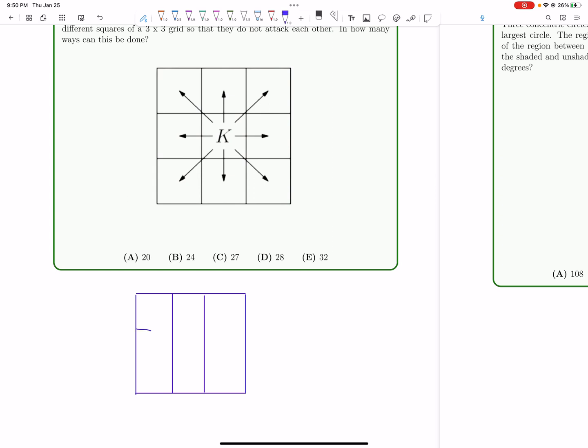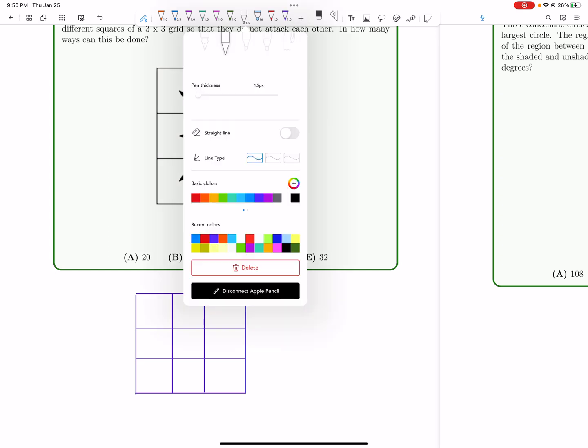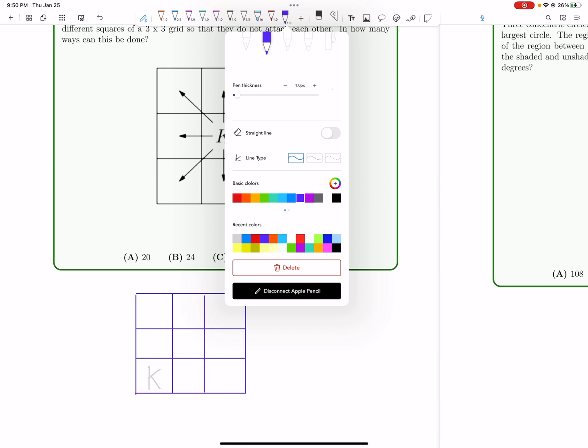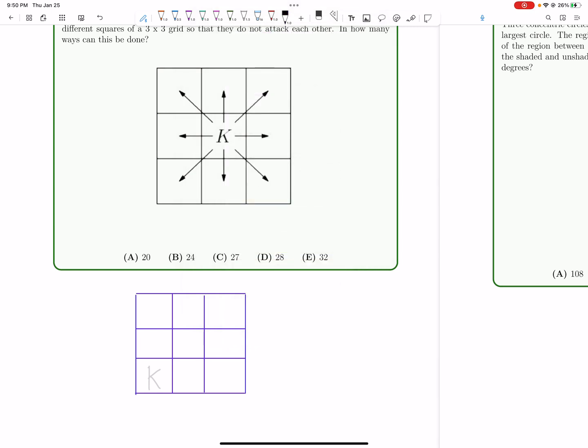We don't need to do that because a lot of these squares have exactly the same number of ways. For example, instead of using white, I'll use this light grayish white kind of color. So let's say we put a king here. How many ways are there to put the black king? Where can we put the black king? Well, this white king, it attacks here, here, and here.